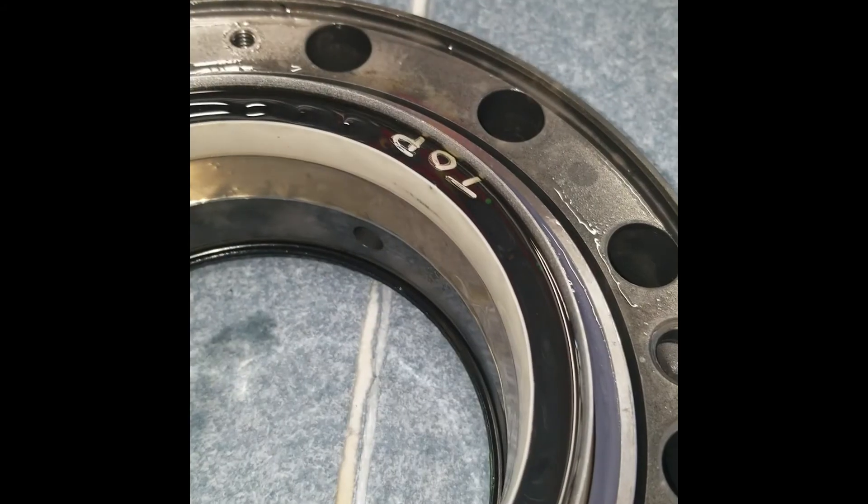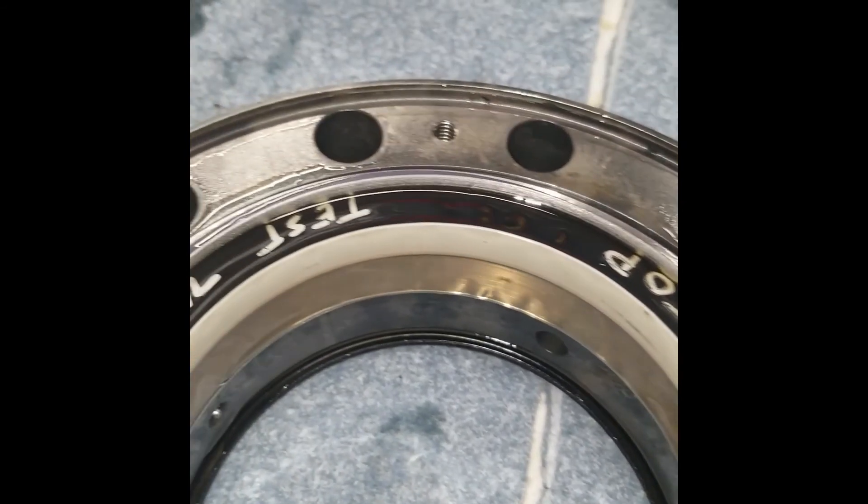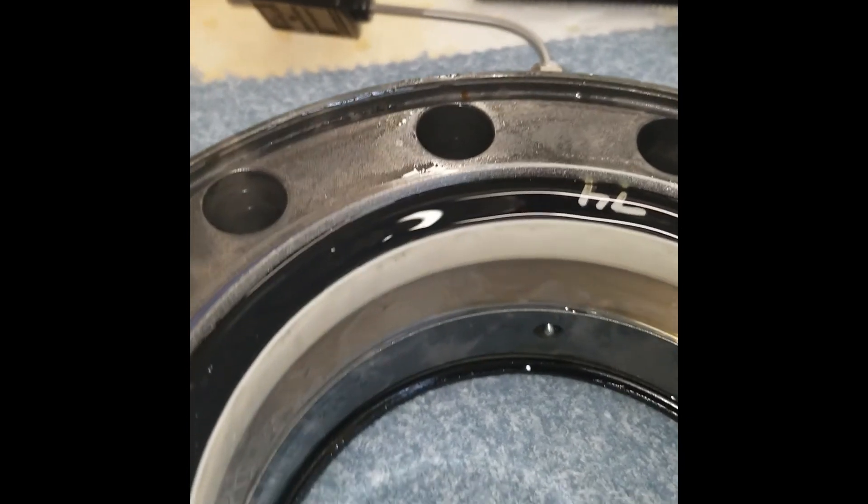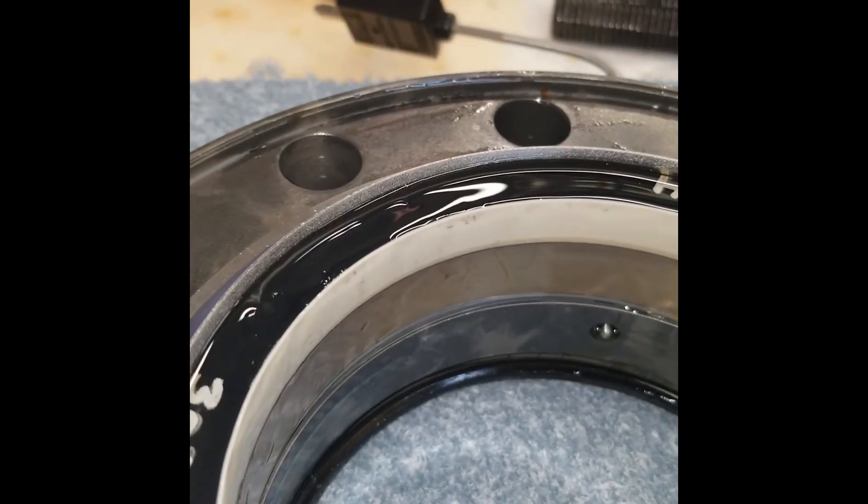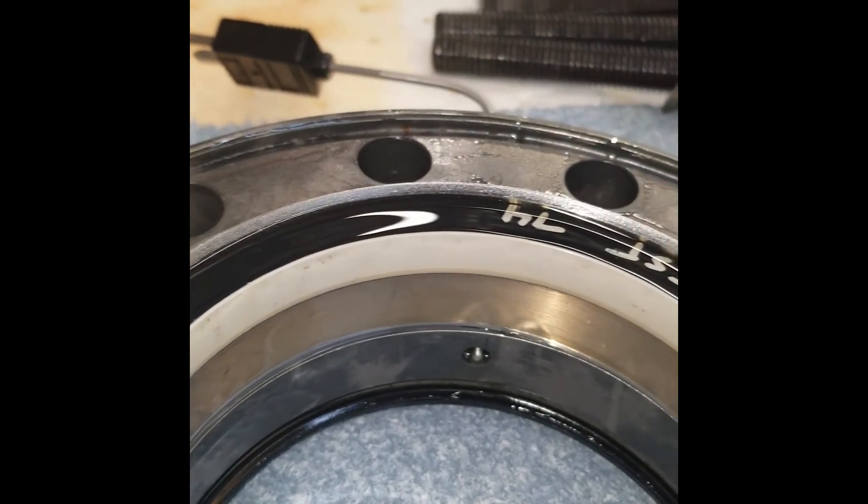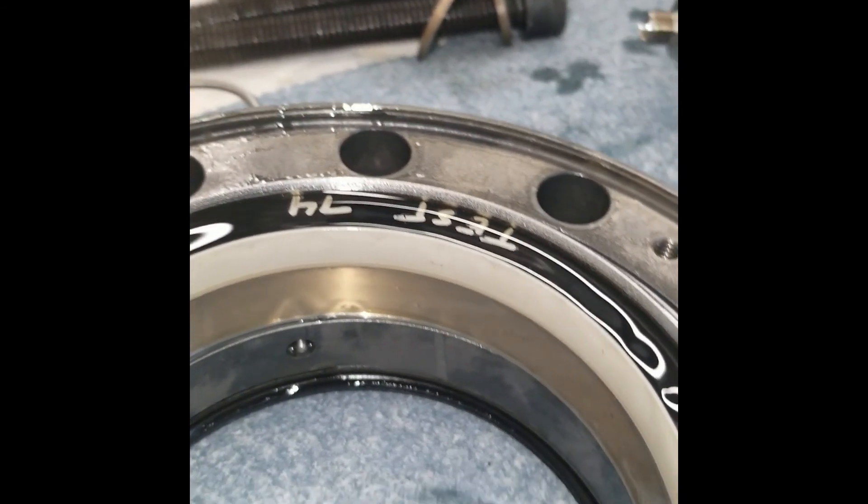The upper seal normally outperforms the lower seal in this test fixture. This test was no different. The used upper seal is shown. The upper seal was in excellent condition at the conclusion of the 320-hour test, while the lower seal had significant wear but was still functional.